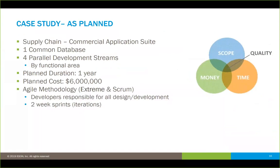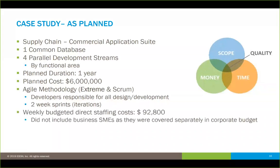The way this project was stood up was on that self-organizing concept where developers are responsible for all design and development. It was broken into two-week sprints. The weekly budgeted cost was just under $93,000 in direct costs of the actual project team. The project also included business subject matter experts, but their costs were not incorporated because they were considered overhead already in the corporate budget. So we're talking about direct resources only here.